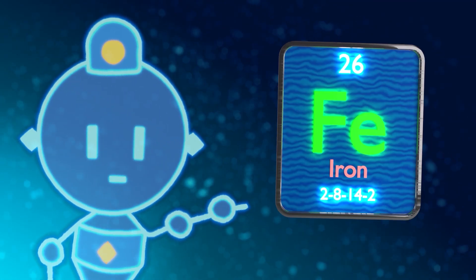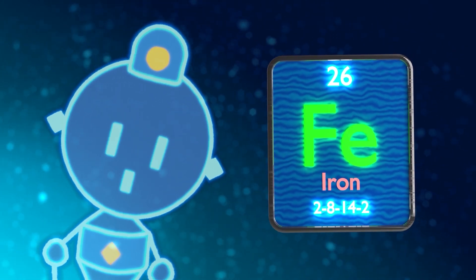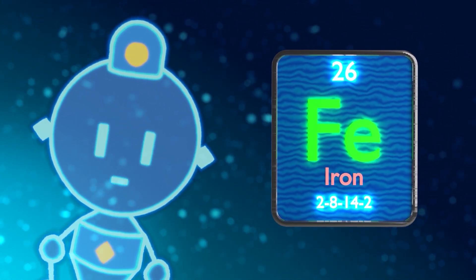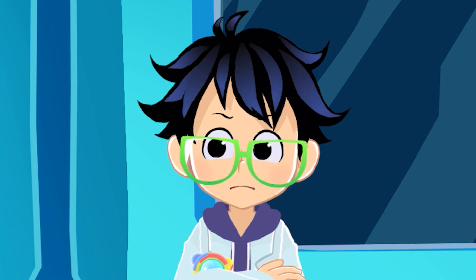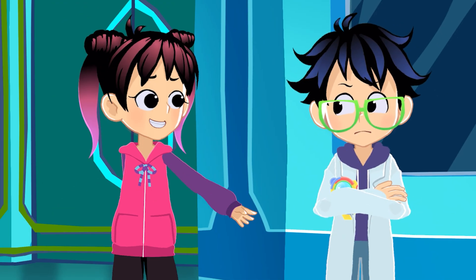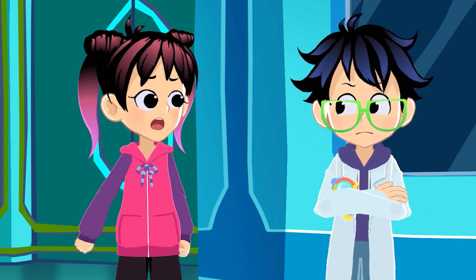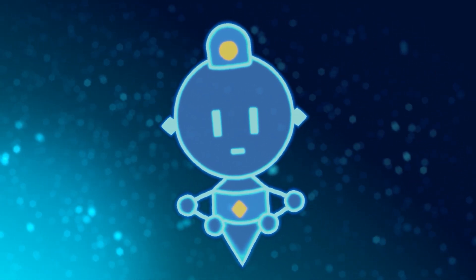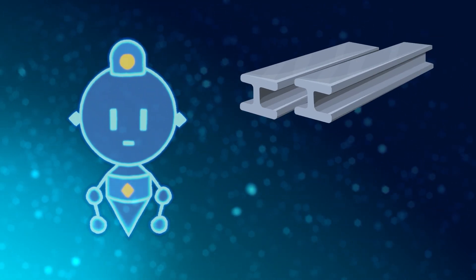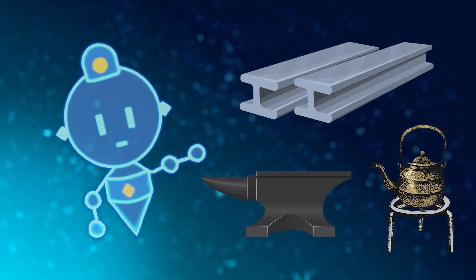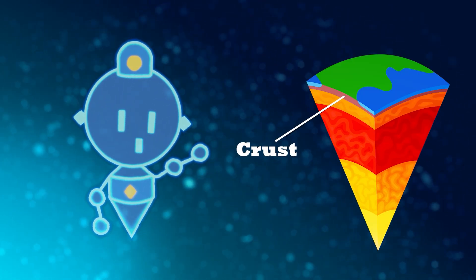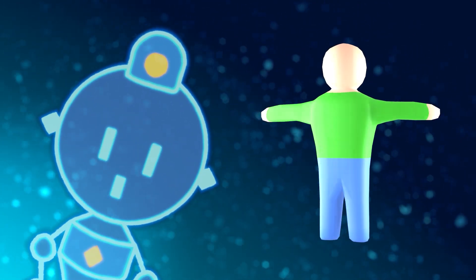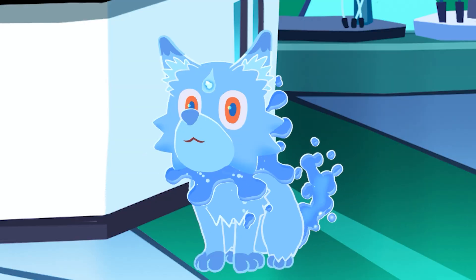Coming in at number three: iron. Chemical symbol Fe. Classification: Transition Metal. Atomic number: 26. And remind us, Leo — what does the atomic number signify? Number of protons in the nuclei of those atoms. You are correct, Leo! And, Ella, you are correct too — Leo, you could stand to smile more! Iron is, by mass, the most common element on Earth. It can be found in the Earth's crust, in water, and even in your human body. About three to four grams of iron are flowing through your bodies right now. Neat, right? Now it's time to move on to my second favorite element.